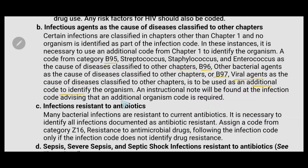Whenever you check an infection code, you will find an instructional note indicating that an additional organism code is required. Next is infections resistant to antibiotics. Many bacterial infections are resistant to current antibiotics, so it is necessary to identify all infections documented as antibiotic resistant. We have to assign a code from category Z16, resistance to antimicrobial drugs, following the infection code — only if the infection code does not identify drug resistance. First, code the type of infection; second code will be Z16.